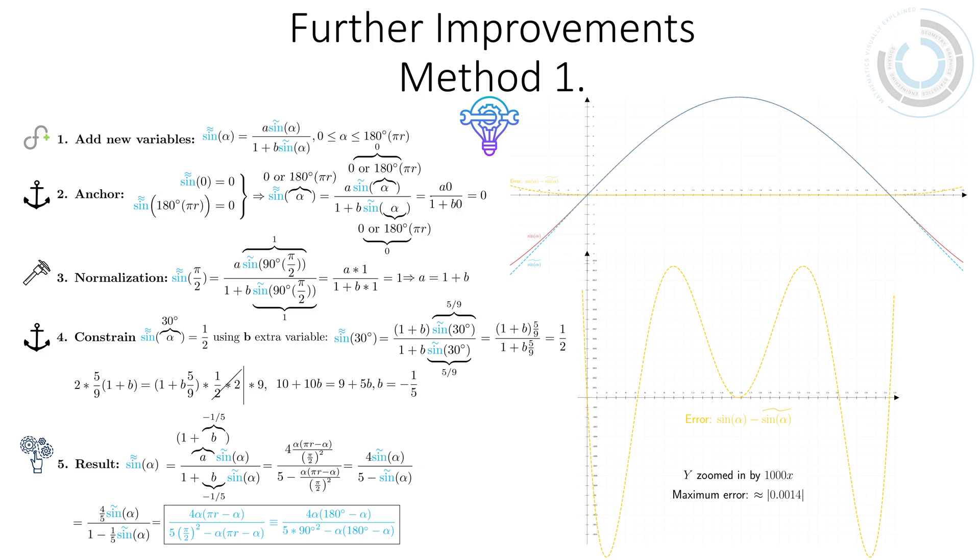We could derive the same formula by also using another trick. Let's start with our extra anchor at 30 degrees this time. We want our sine double tilt to yield 0.5 at 30 degrees, and we know our previous approximation yields 5 per 9. Define sine double tilt by sine tilde divided by an arbitrary function q, which must yield 10 per 9 at 30 degrees, so that our fractions normalize to 1 half. That's our first anchor for sine double tilt and our q function.